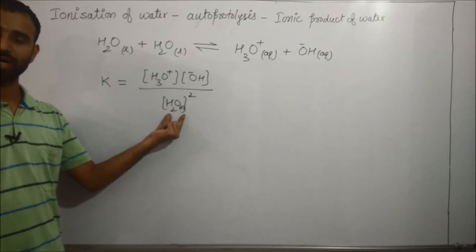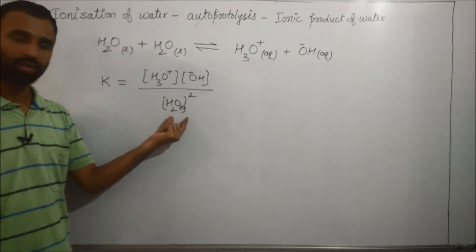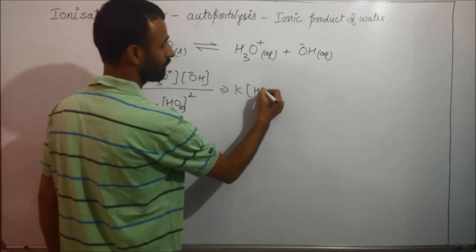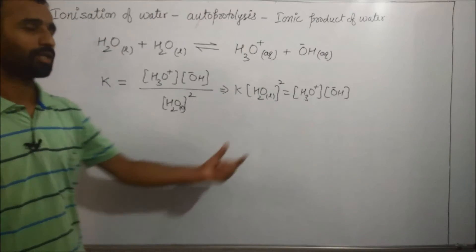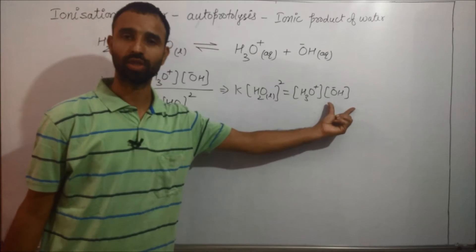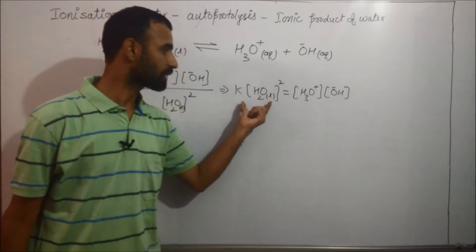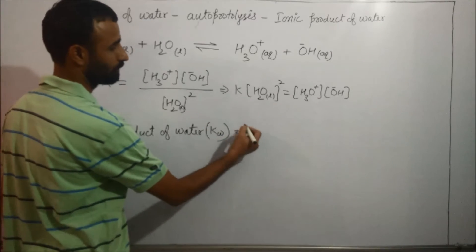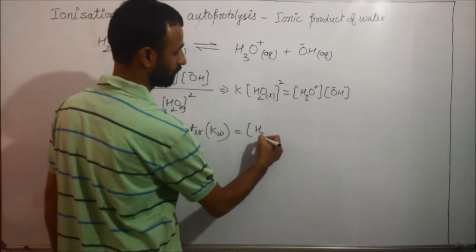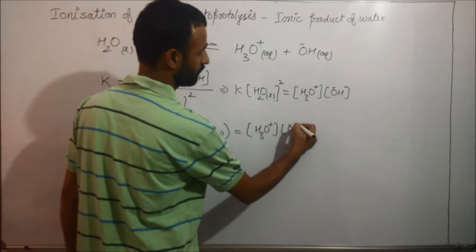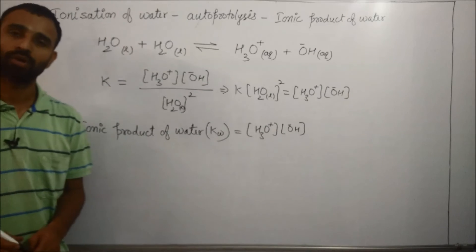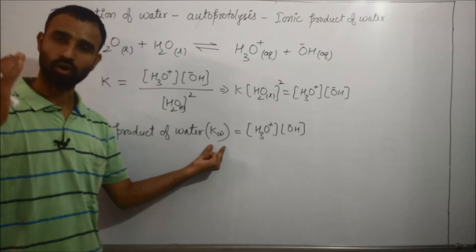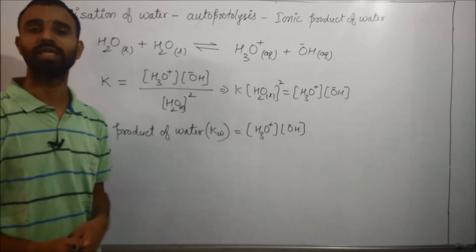That implies K into H2O liquid square equals H3O+ into OH-. And this is known as ionic product of water. KW is equal to H3O+ ion concentration into OH- concentration. And value of KW is constant at constant temperature.